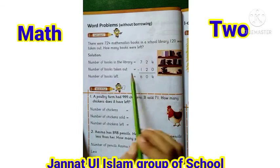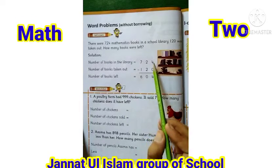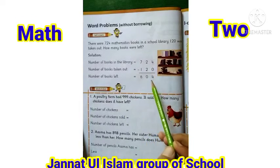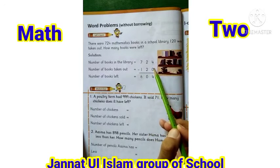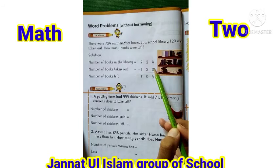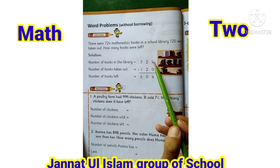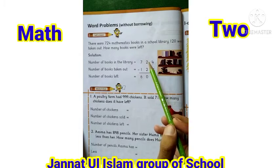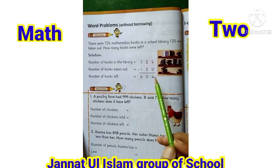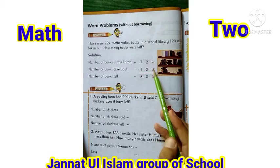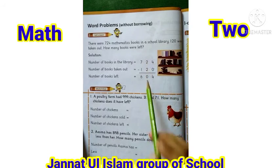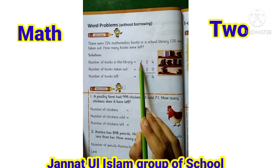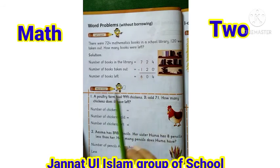724 کو اوپر لکھا، 120 کو نیچے لکھا۔ 4 میں سے 0 minus کریں تو 4 — کیونکہ جب 0 نیچے ہو تو 0 کی کوئی value نہیں ہوتی۔ 2 میں سے 2 minus کریں تو 0، اور 7 میں سے 1 minus کریں تو 6۔ جواب ہے 604۔